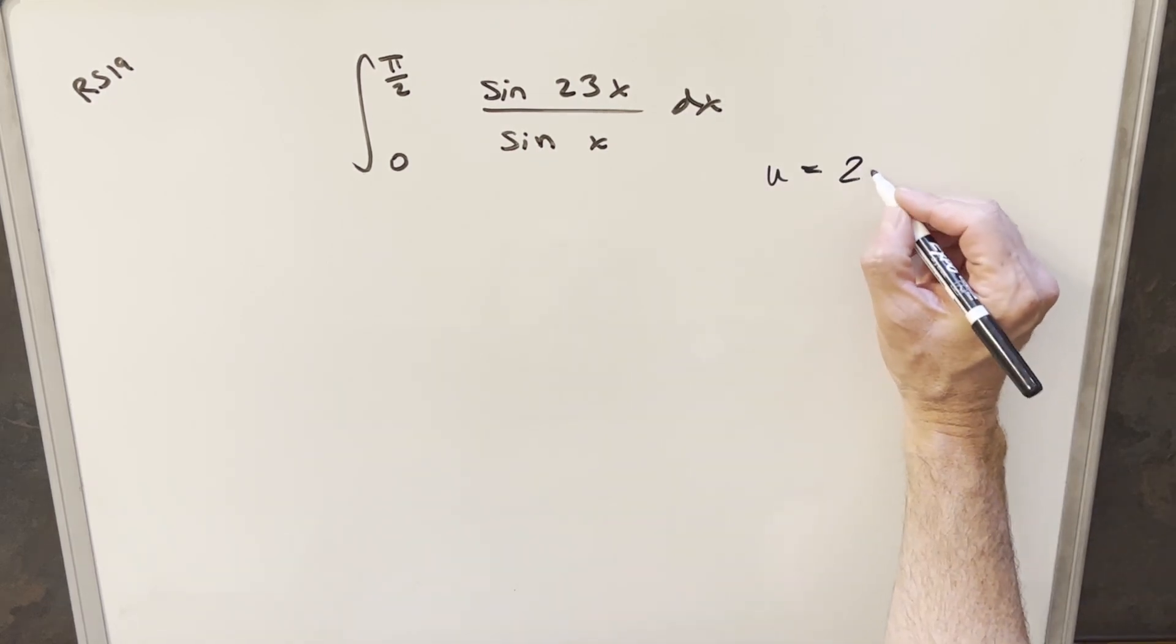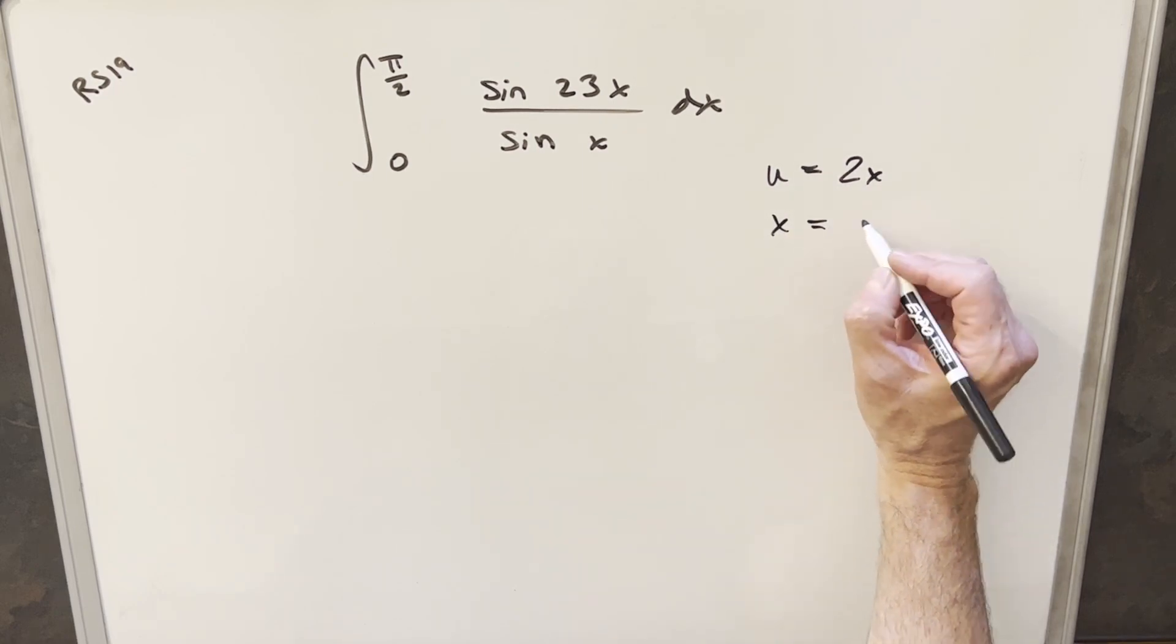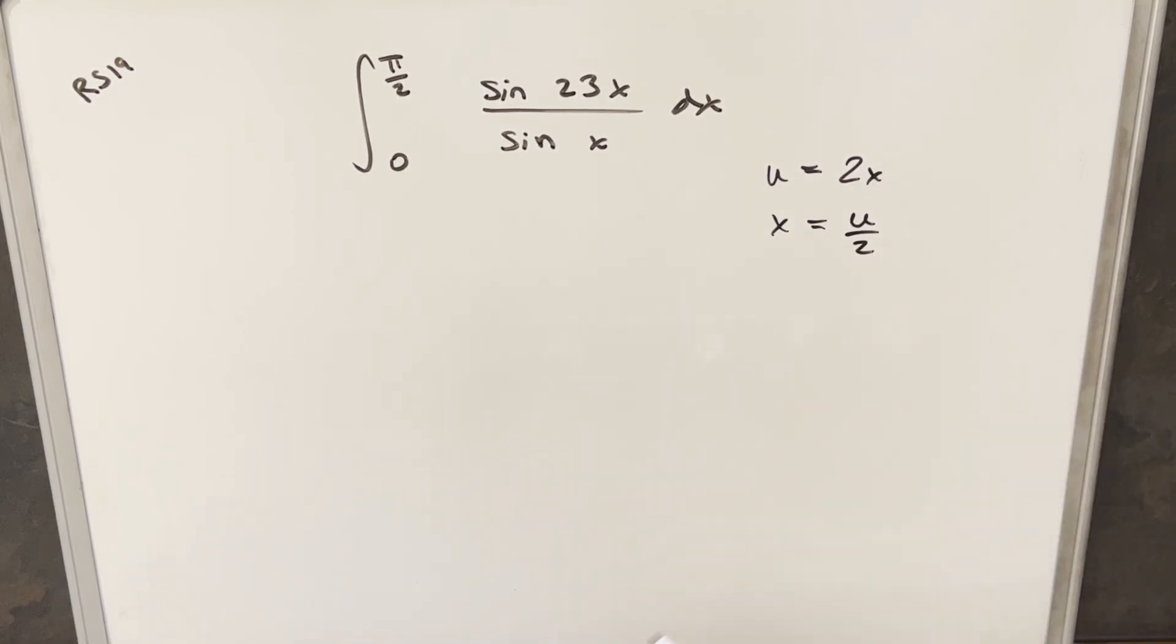I'm going to set my u equal to 2x, and then therefore we can just find our x value is going to be u over 2. I'll take a derivative, so dx is going to be just 1 half du.